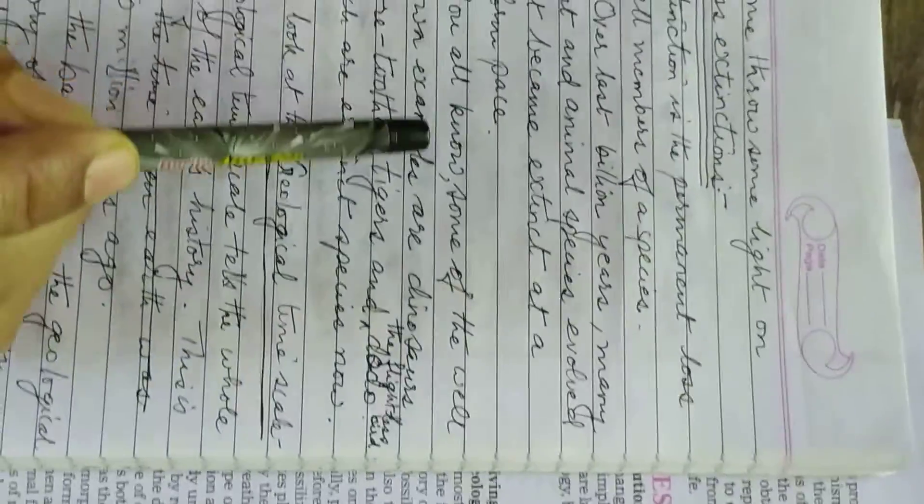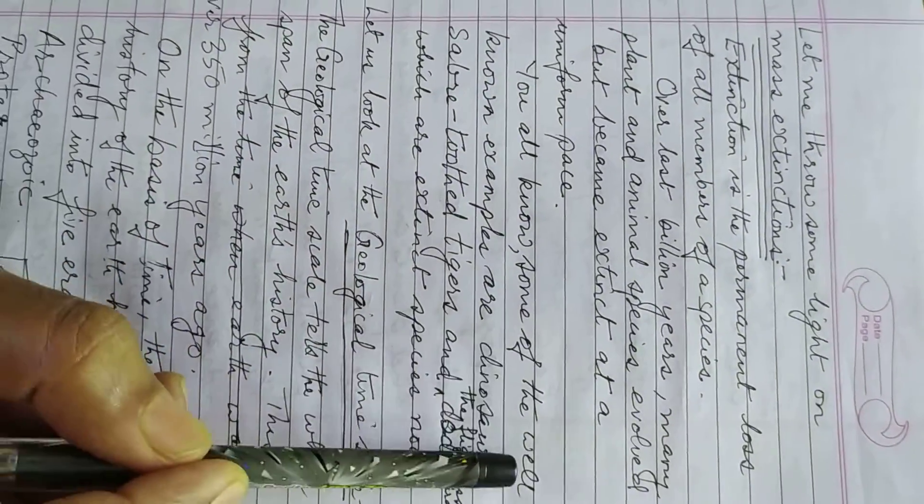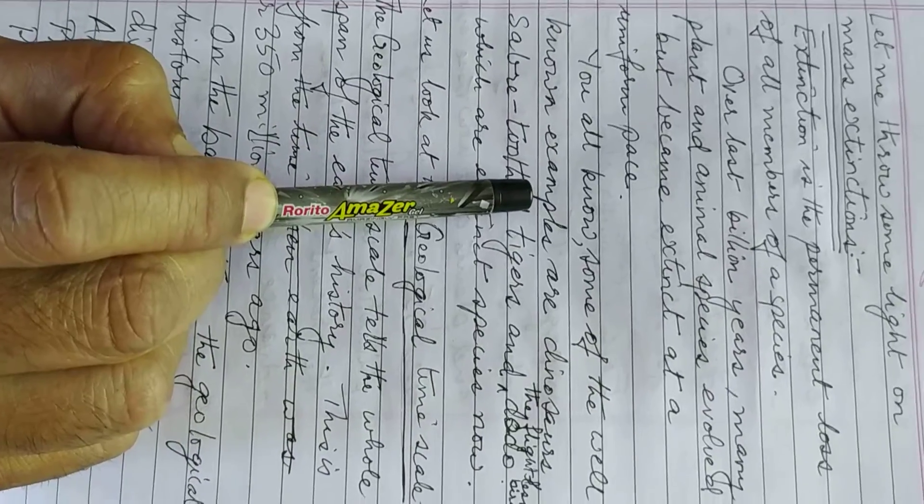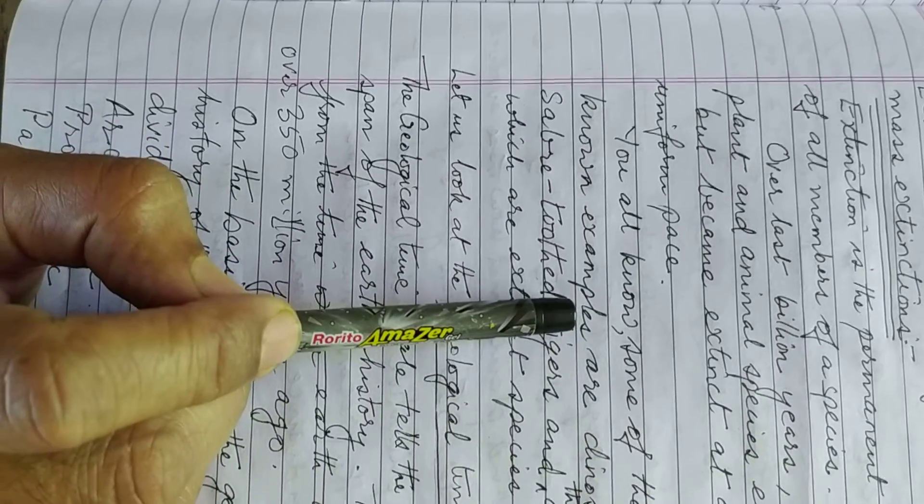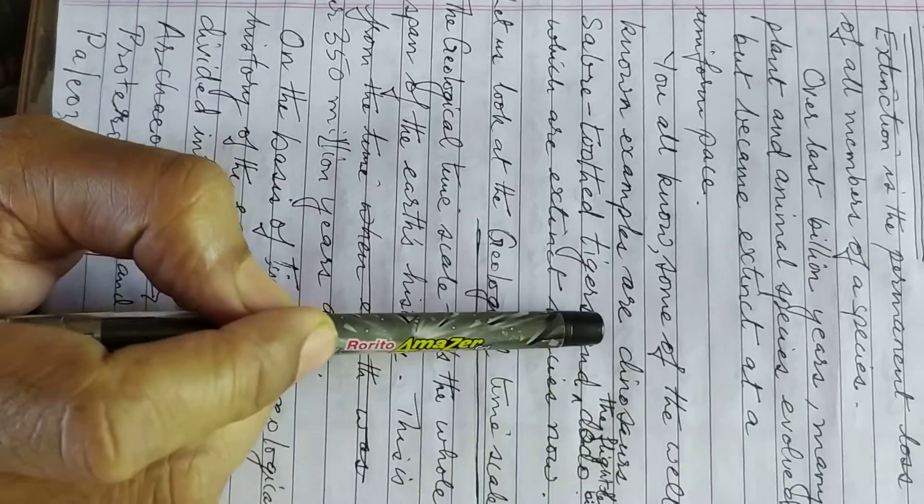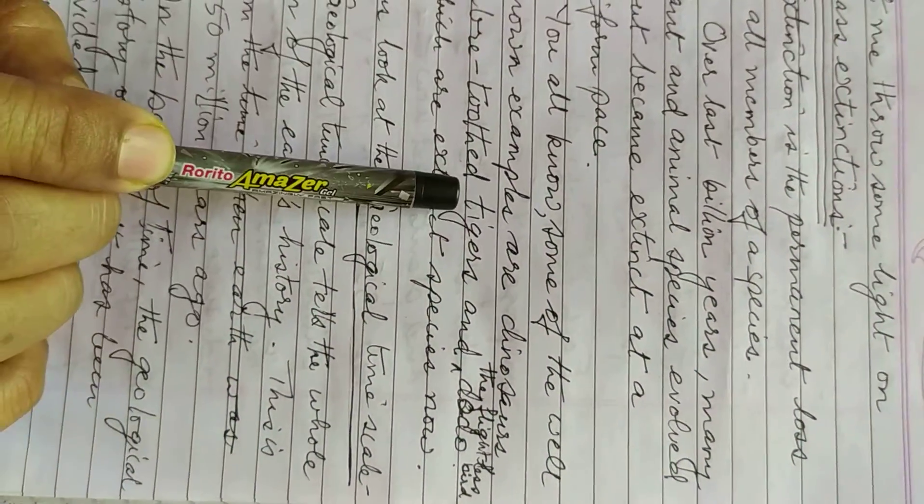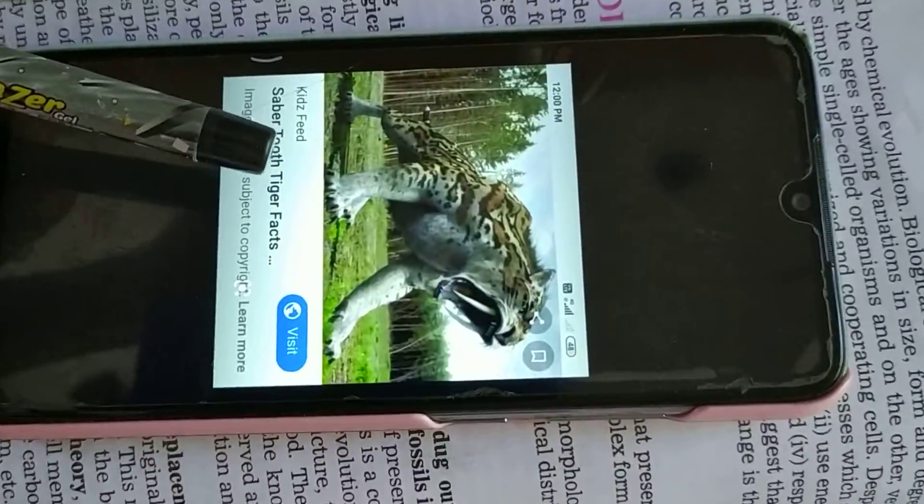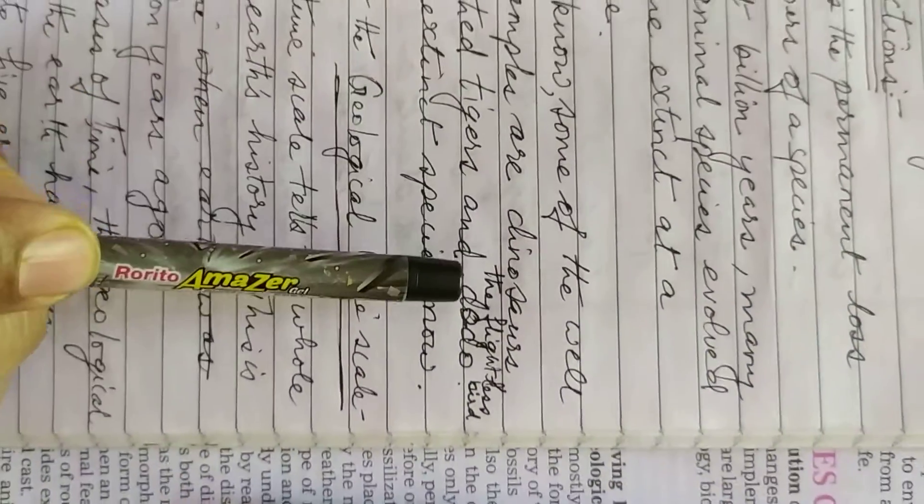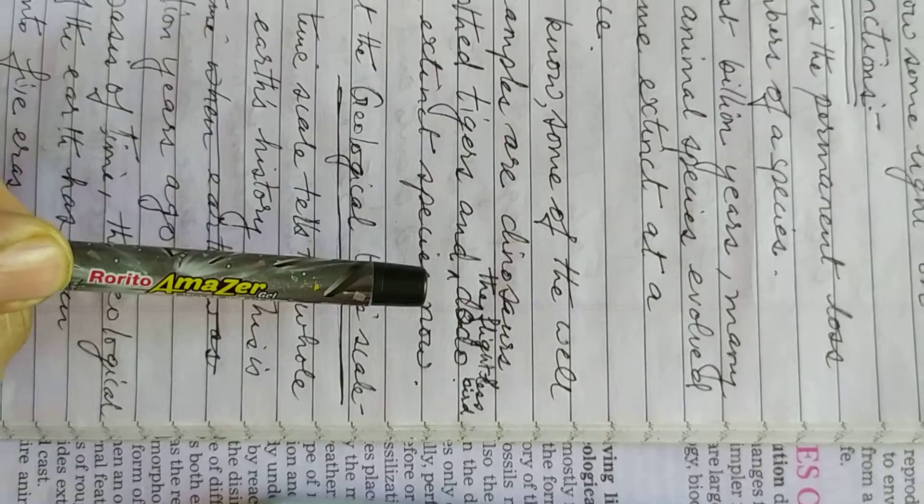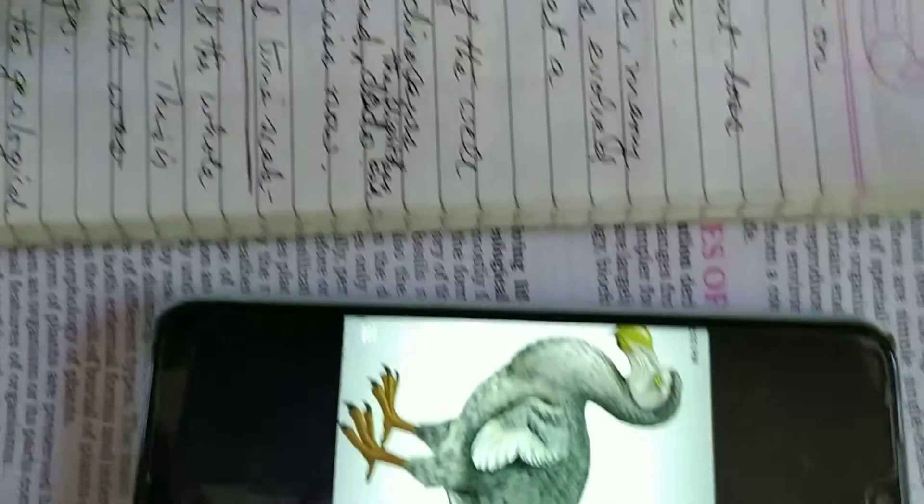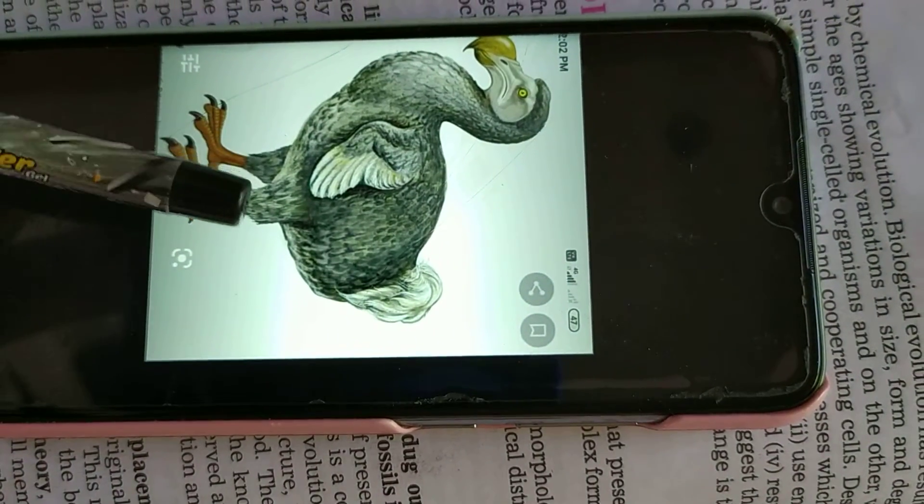You all know some of the well-known examples which are extinct now, like dinosaurs, sabre-toothed tigers and the flightless bird dodo, which are extinct species now.